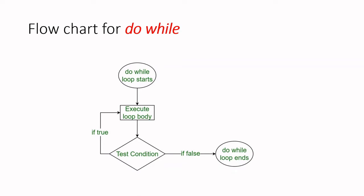This is the flowchart for do-while. The loop starts and it will directly execute the body of the loop, and only after executing it will it check the condition. If the condition is true, it will go back to the loop. If it is false, the loop will end. So this is an exit-controlled loop.